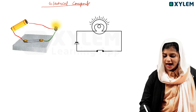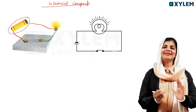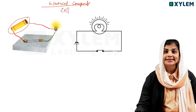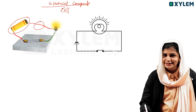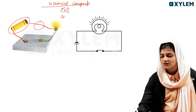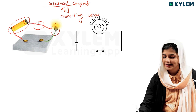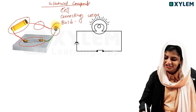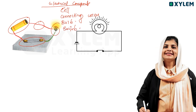The electrical components we need are: the battery, the cell — spelled C-E-L-L — connecting wires, a bulb, and a switch.